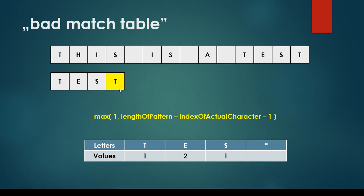For the last character in the pattern, it is also T, but we already have a T value in our badmatch table — it was 3. This is extremely important: if we encounter the same character again, we just update the value accordingly. The length of the pattern is 4, index of this T is 3, so: maximum of 1 and (4 minus 3 minus 1) = maximum of 1 and 0, which is 1. So we update the T value from 3 to 1.